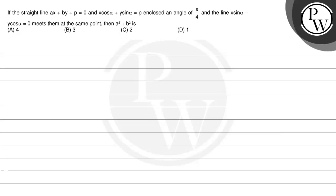Let us read the question. If the straight line ax plus by plus p equals 0 and x·cosα plus y·sinα equals p enclose an angle of π/4, and the line x·sinα minus y·cosα equals 0 meets them at the same point, then a² plus b² is: option A: 4, option B: 3, option C: 2, option D: 1.